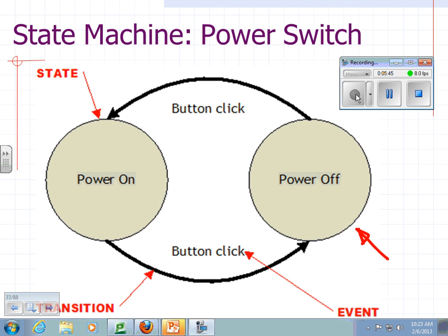So, your two states are power off and power on, and there's an action, button click. But the transition that occurs depends on the state. So, even though in both cases the event is the same, clicking the button, if you are in the power off state, you go to the power on state. And if you're in the power on state, that same button click takes you to the power off state.